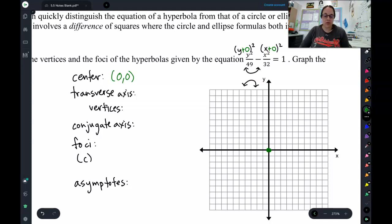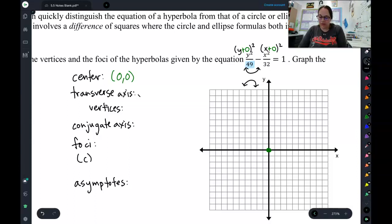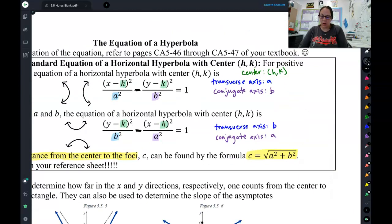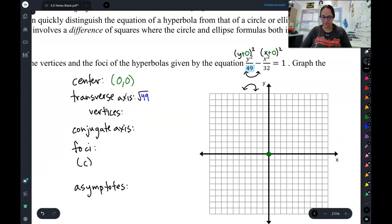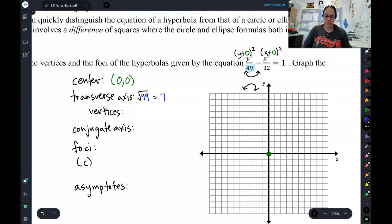Next comes the transverse axis. Transverse axis comes from whichever number comes first. So that's the 49. So I do need to do the square root of it, just like I did with ellipses. And the reason we do the square root is in the equation, it's squared. So to get a by itself, we have to square root to get it by itself. So square root of 49 gives me a transverse axis of 7.